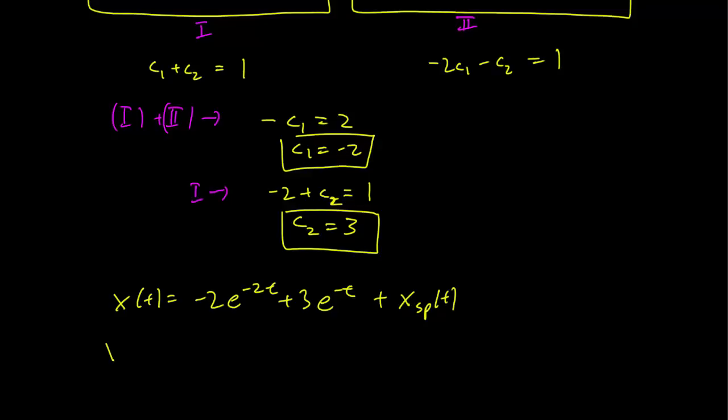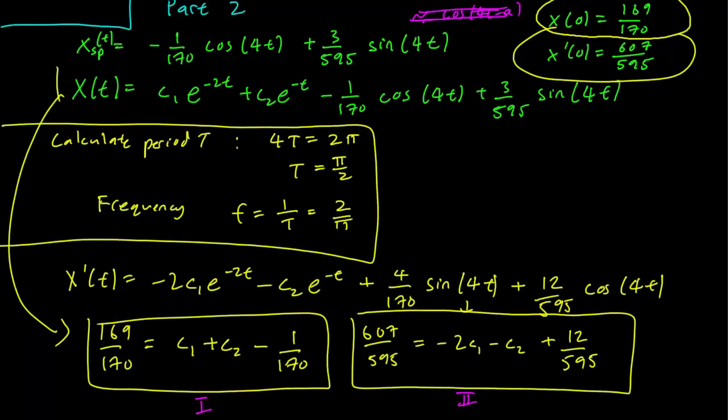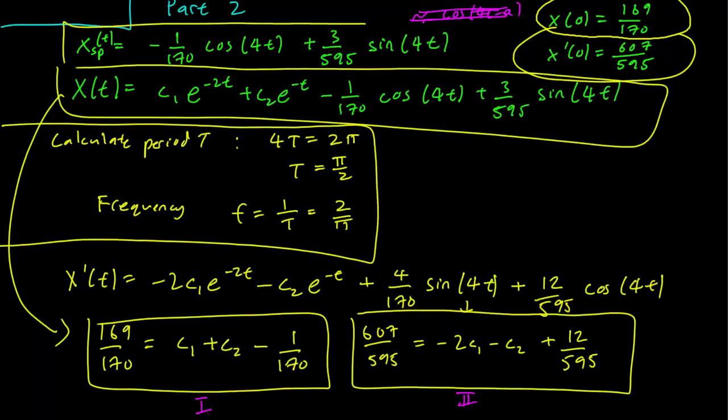But the point here is that our transient solution is simply the part that will disappear when t heads to infinity. Remember as t heads to infinity, this goes to 0 and this goes to 0. So our transient solution is the solution that goes to 0. This is just going to be minus 2 e^(-2t) plus 3 e^(-t). So that's it, transient solution, general solution, and steady periodic solution. We've calculated all three.